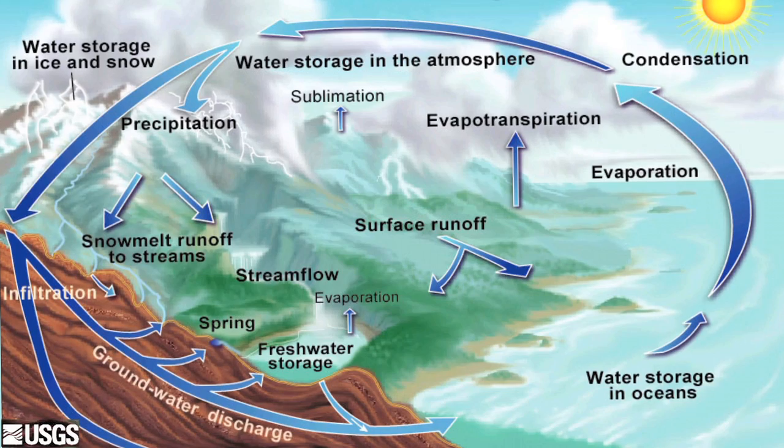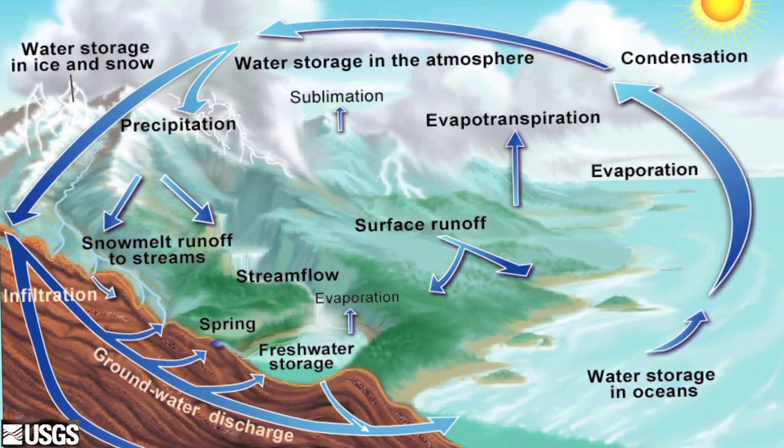The principal sources are evaporation and transpiration. So these are the ways that water enters into the Earth's atmosphere.